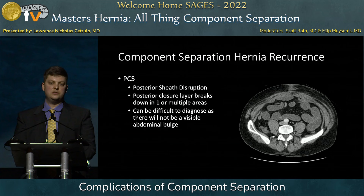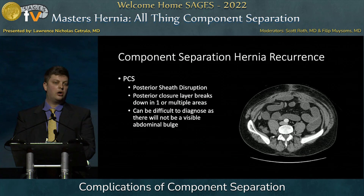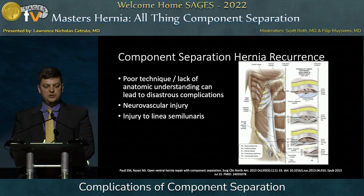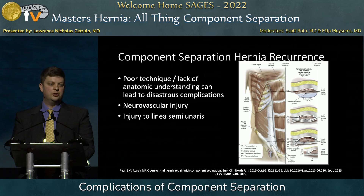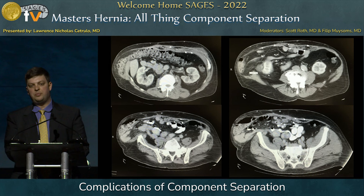I have managed patients with chronic posterior disruptions — those are not fun cases. If you can find this early, I recommend repairing it early, as opposed to waiting, because scarring of the bowel to your uncoated mesh will make the next surgery much harder. This picture from Paul Rosen's paper on component separation illustrates that poor preparation and poor understanding of anatomical layers can lead to disastrous complications — whether injury to the semilunar line or injury to the neurovascular bundle. Both cause significant problems.